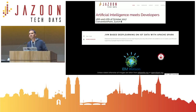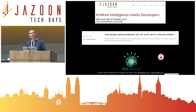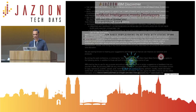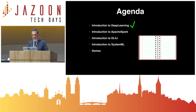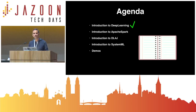Who of you has used TensorFlow in production already, or as a hobby project? And who of you doesn't know how an artificial neural network works? Here's a disclaimer: if you kill yourself or your family or your company by doing anything I've told you, I'm not responsible. So I'll do a fast introduction into deep learning, then the same for Apache Spark, then show you two frameworks you can use on top of Spark, and then a demo.